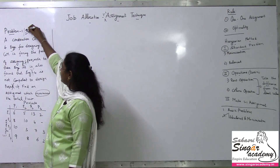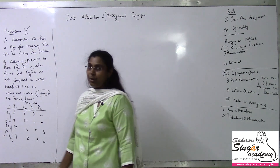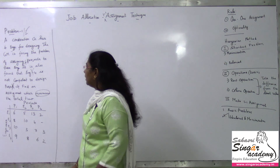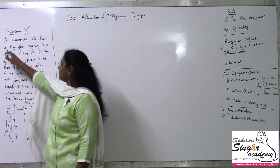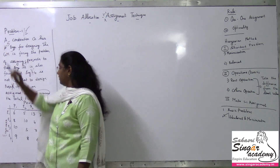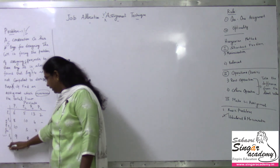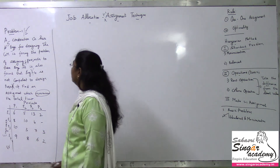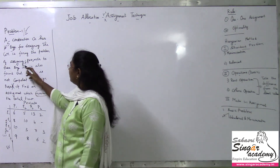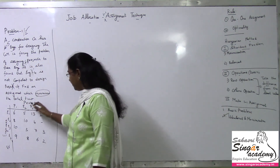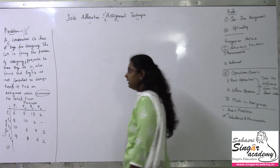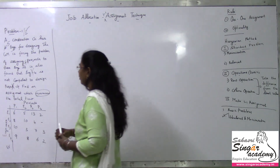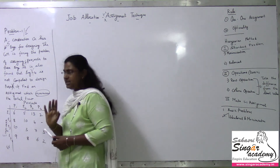Now I am going to make some changes in this problem. A construction company has five engineers — E1, E2, E3, E4, and E5. The GM is facing the problem of assigning four projects: P1, P2, P3, and P4. It is also found that engineer four is not competent to design project four — same as before. The objective is to find an assignment which maximizes total profit.